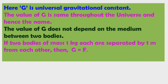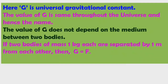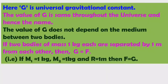If two bodies each have a mass of one kilogram and are separated by one meter, then G is equal to the force of attraction F between them. That is, when m1 = 1 kg, m2 = 1 kg, and R = 1 m, then F = G, or G = F.